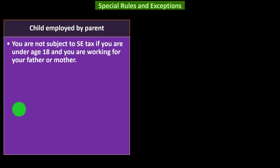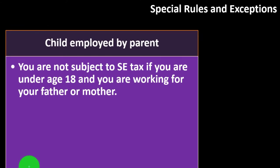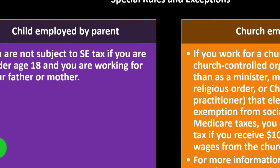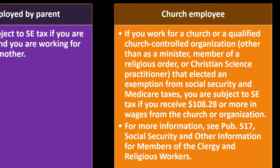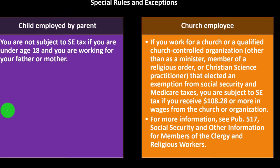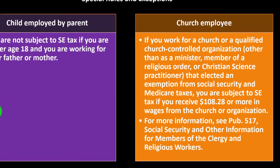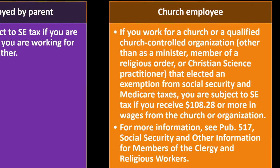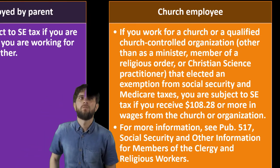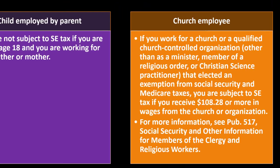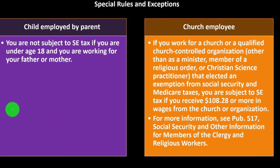Special rules and exceptions: child employment by parent — you are not subject to self-employment tax if you are under age 18 and working for your father or mother. Church employees: if you work for a church or qualified church-controlled organization that has elected an exemption from Social Security and Medicare taxes — other than a minister, member of a religious order, or Christian Science practitioner — you are subject to self-employment tax if you receive $108.28 or more in wages from the church or organization. For more information, see Publication 517.